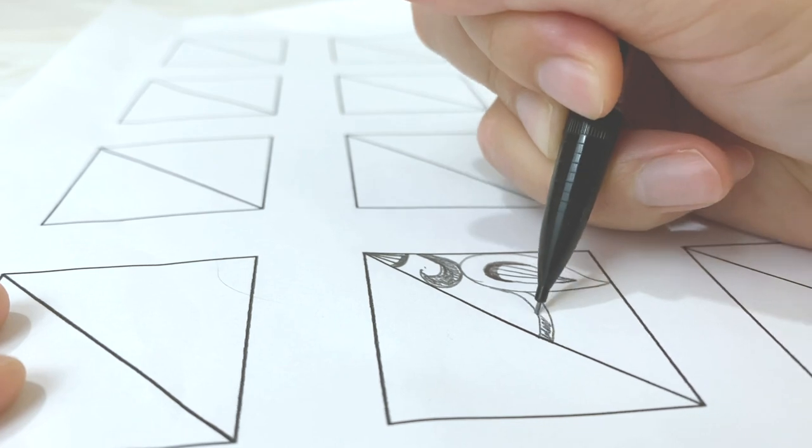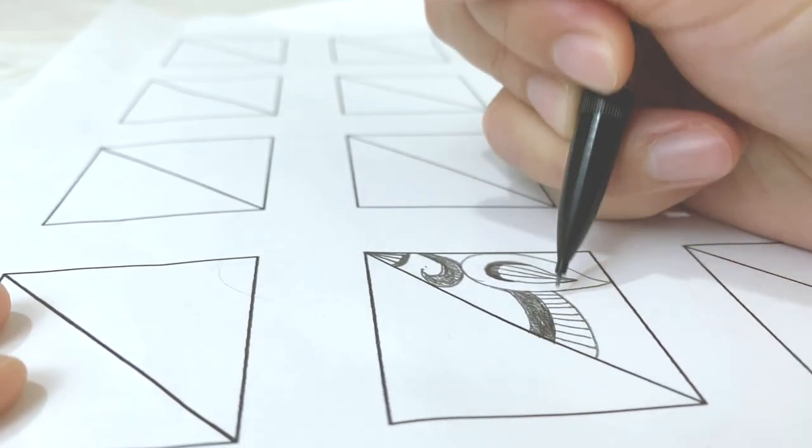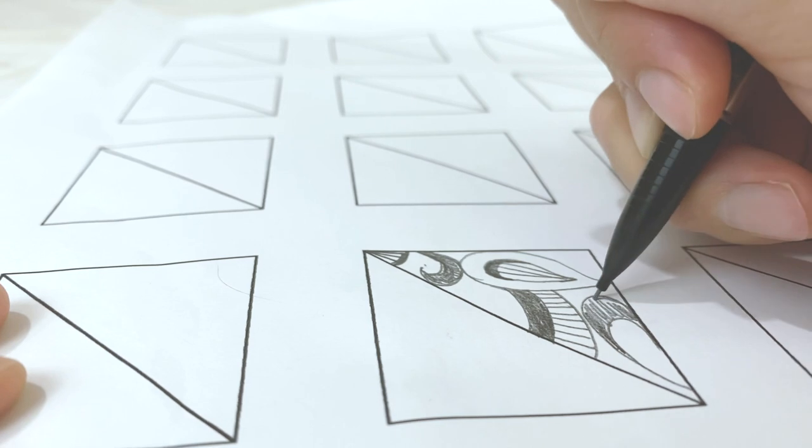like teardrops, swirls, and other lines. You can even use a mirror as you're sketching so that you can see what you're doing.